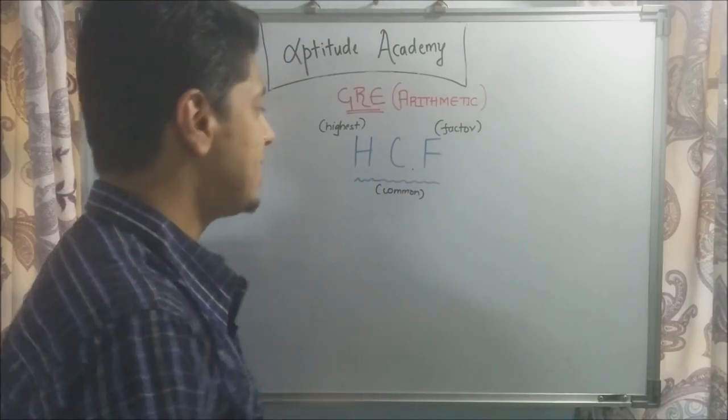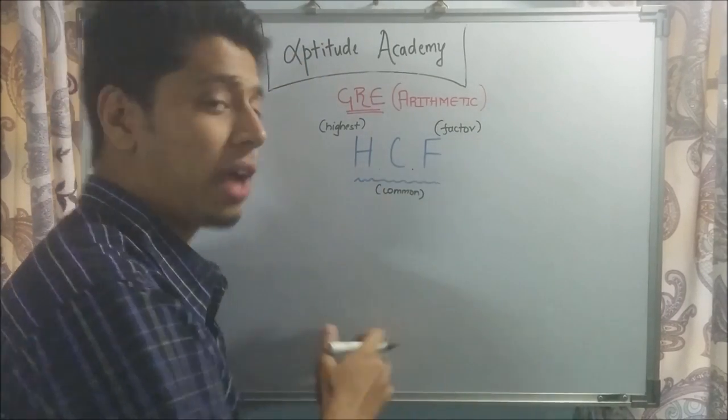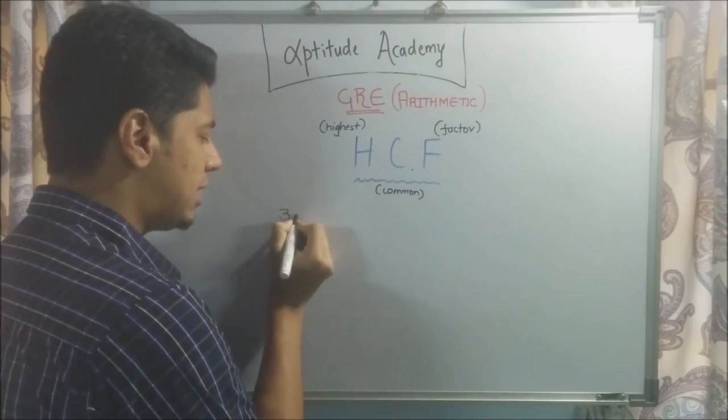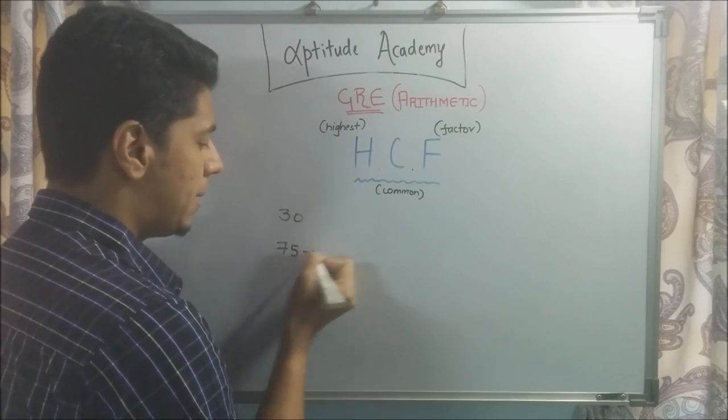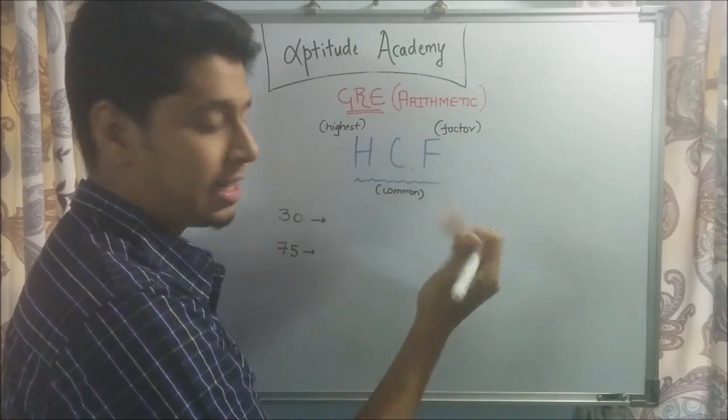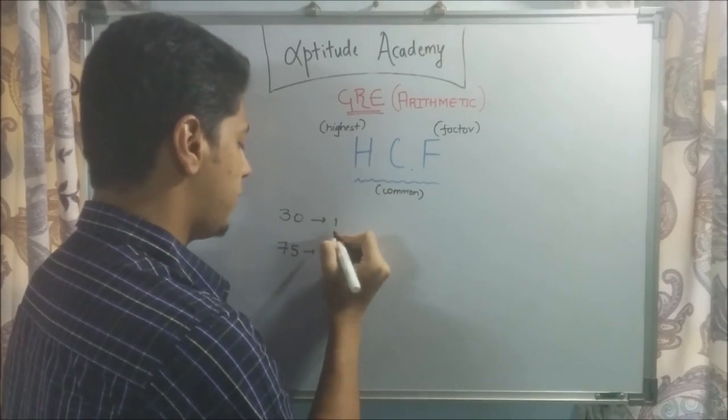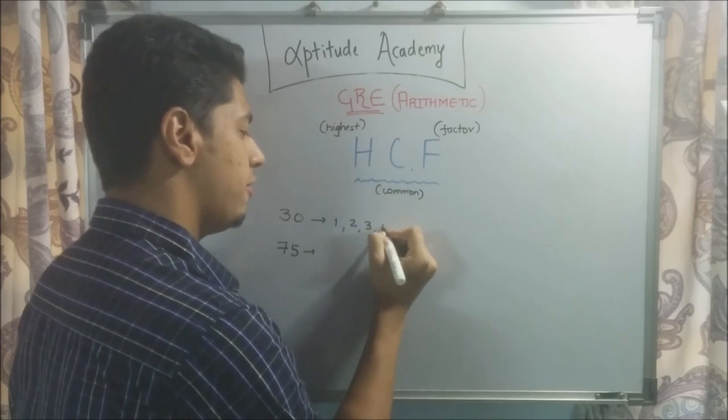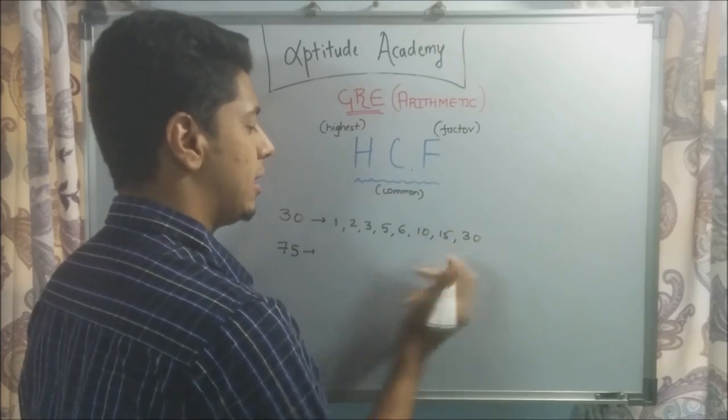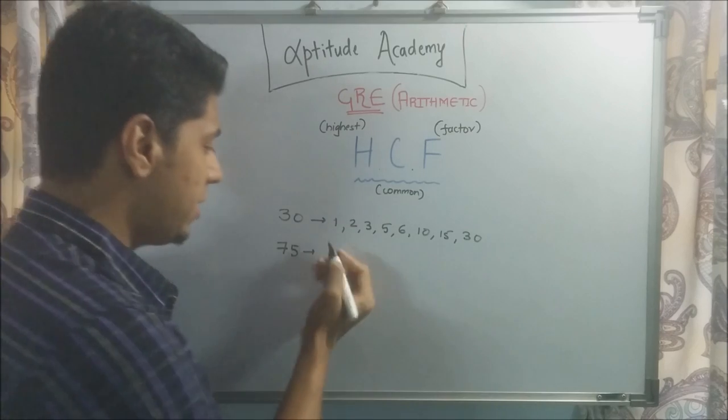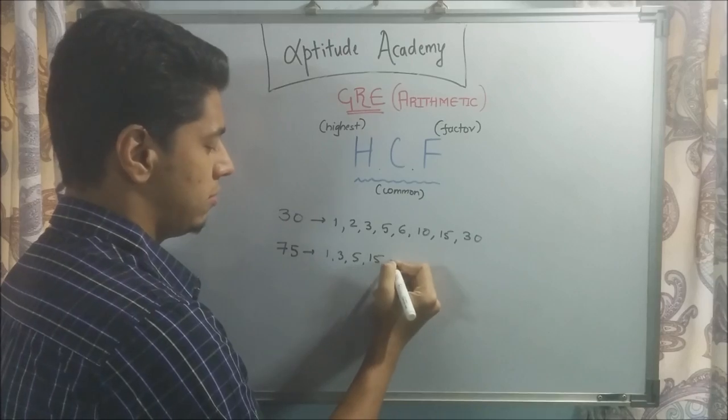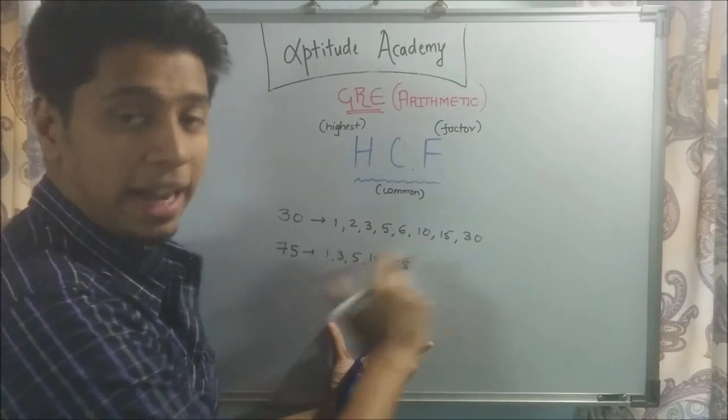HCF is highest common factor. How are we going to explain it? FCH. Let's take two integers, the same two: 30 and 75. Like we explained the LCM, let's list out first F - let's list out all the factors. Factors of 30 are 1, 2, 3, 5, 6, 10, 15, and 30. You'll get better with listing the factors with time. 75 is 1, 3, 5, 15, 75. These are all the factors.